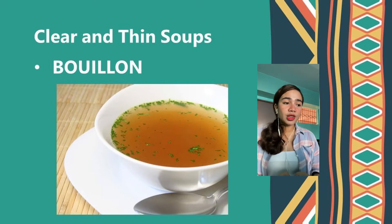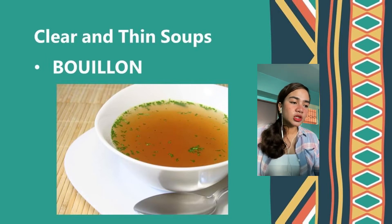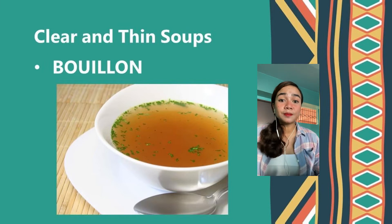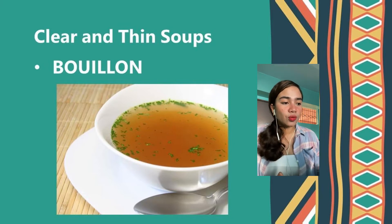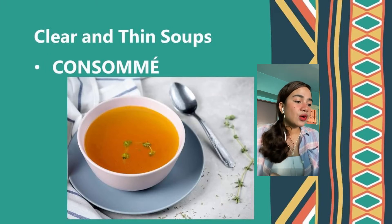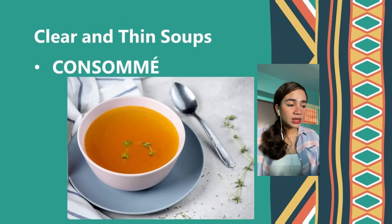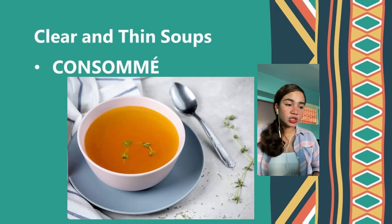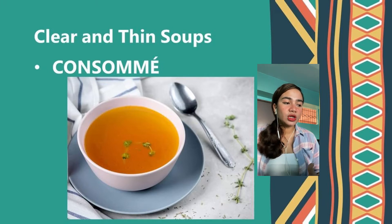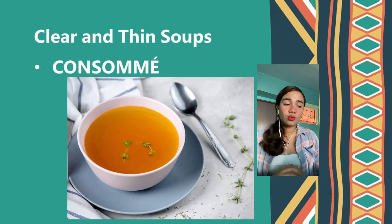Traditionally, this type of soup is called bouillon if it is based on beef, and court bouillon or fumet if it is prepared using fish. Court is the French word for short and describes the preparation time of bouillon, which is much shorter than that of stocks. A consommé is a perfectly clear beef bouillon. One raw egg white is added for every quart of stock, and the mixture is heated to boiling. The egg white will coagulate on the surface of the stock, forming what is referred to as a raft. Because bouillon and consommé are so similar, the three terms are often used interchangeably.